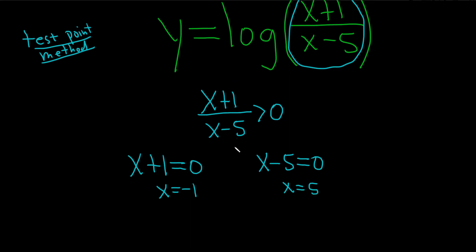So again, step 1, make sure there's a single term on one side and 0 on the other. That was done for us. Step 2, you set each piece equal to 0. We're looking for when they are equal to 0.